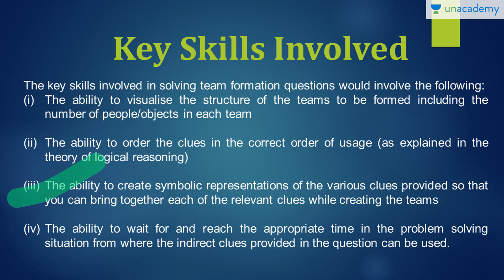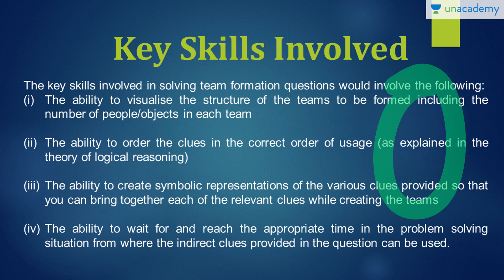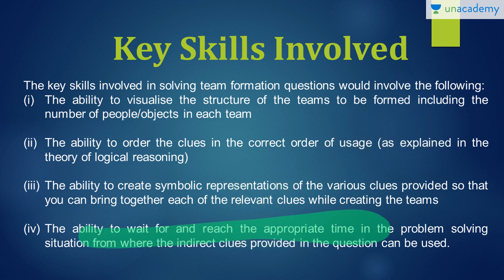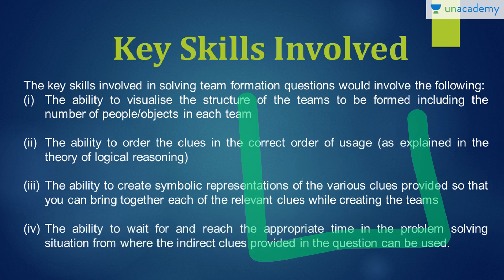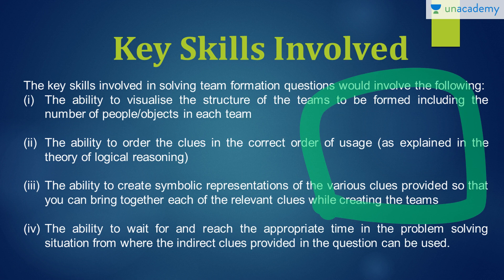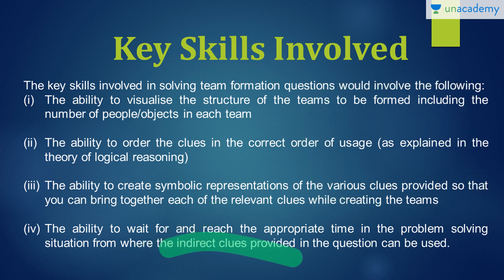Skill three: the ability to create symbolic representations of the various clues provided so that you can bring together each of the relevant clues while creating the teams. If at a certain point you are unable to fit the clues into the tabular structure, you can set them aside as a visual clue to use later to fill in the table and get the solution. Skill four: the ability to wait and reach the appropriate time when you can use some indirect clues to get the solution. This is very important because most of the time the table will be incomplete after all direct clues are used, and only by analysis of indirect clues will you be able to get to the solution.